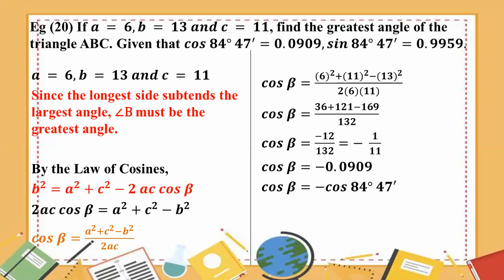180 plus theta, 180 minus theta, 90 plus theta, 90 minus theta. Note that cos(180 minus theta) equals negative cos theta. So the minus cos gives a negative value in this process.